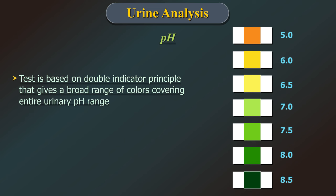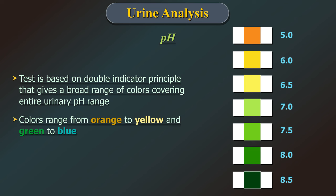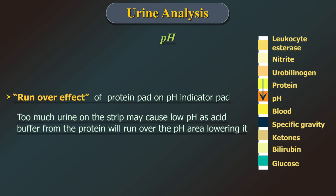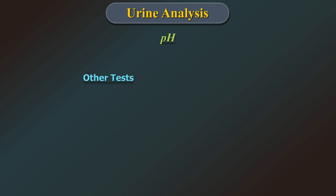pH test: based on the double indicator principle giving a broad range of colours covering the entire urinary pH range, from orange to yellow and green to blue. Limitations: bacterial overgrowth may cause a marked alkaline shift due to urea conversion to ammonia. The run-over effect of the protein pad on the pH indicator pad — too much urine on the strip may lower pH as acid buffer from the protein pad runs over the pH area. Other tests are blood gases to determine acid-base status.